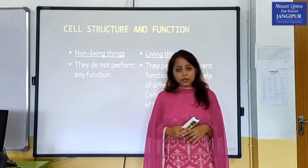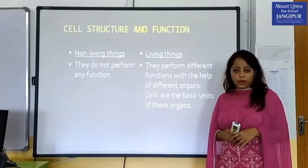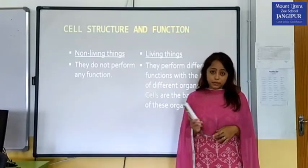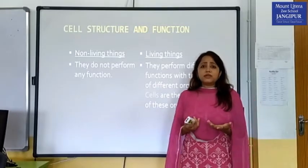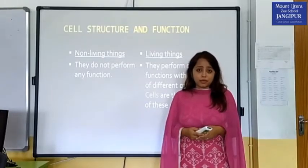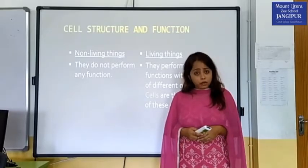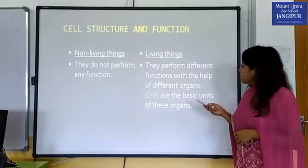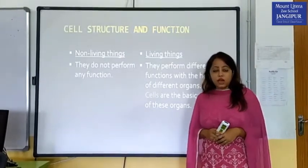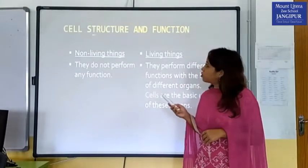What more difference is there in living things which non-living things do not have? Non-living things do not perform any function, whereas living things — animals or plants — they can perform functions. Now, what is present in the body so that they can perform such a wide variety of functions? There must be some basic structure. They perform different functions with the help of different organs. Cells are the basic units of these organs — the basic units of the whole human body are cells. That is what our chapter is about.